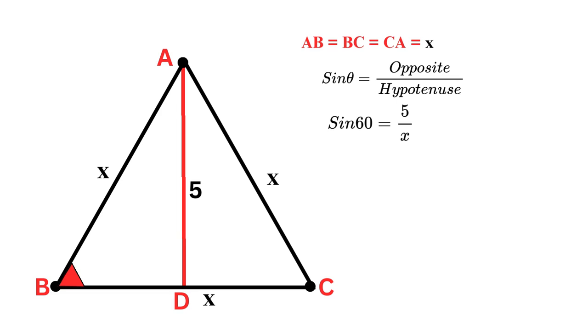We know that sin 60 equals square root of 3 over 2. By putting this value, we get square root of 3 over 2 equals 5 over x. By cross-multiplication, we get square root of 3 times x equals 10. By simplification, we get x equals 10 over square root of 3.